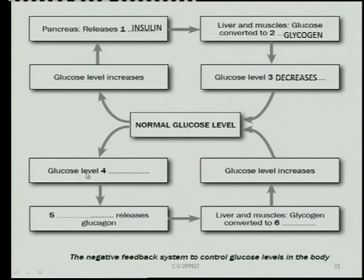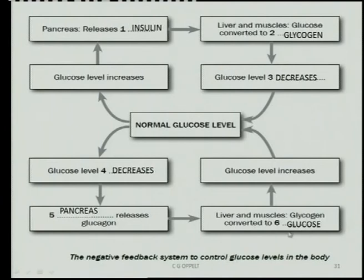But what happens if the glucose level is too low? The pancreas releases glucagon. The liver and muscles then convert glycogen back into glucose, the glucose level increases, and it becomes normal again. As you can see, the concentration of glucose controls its own concentration — that is the essence of negative feedback.